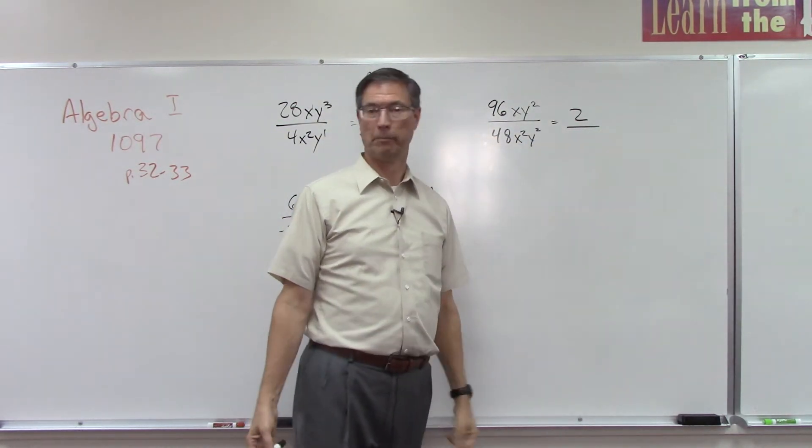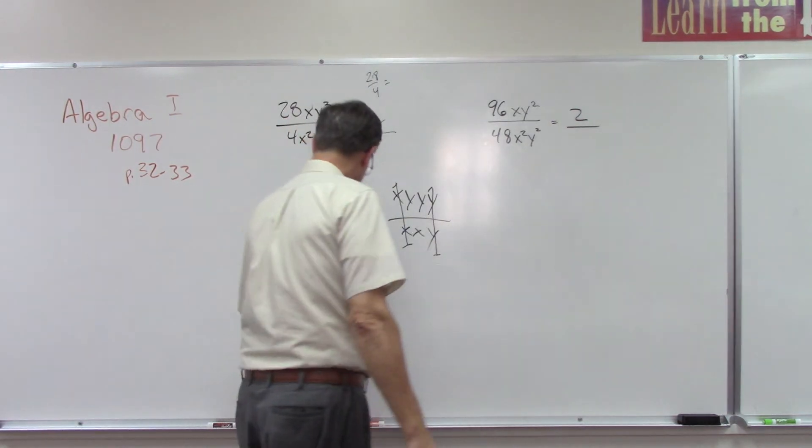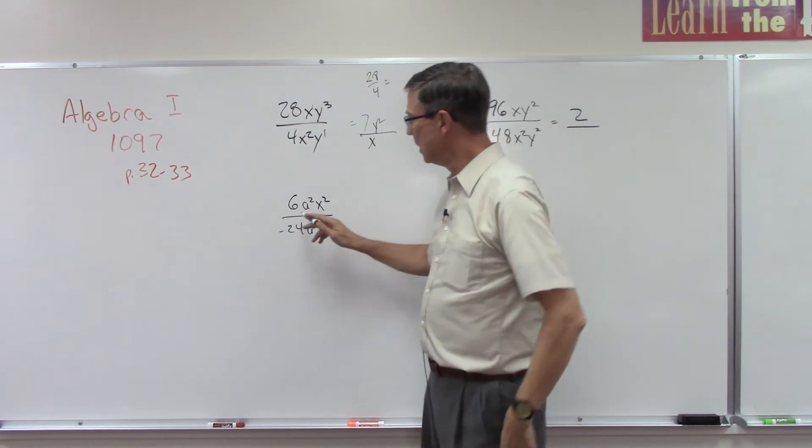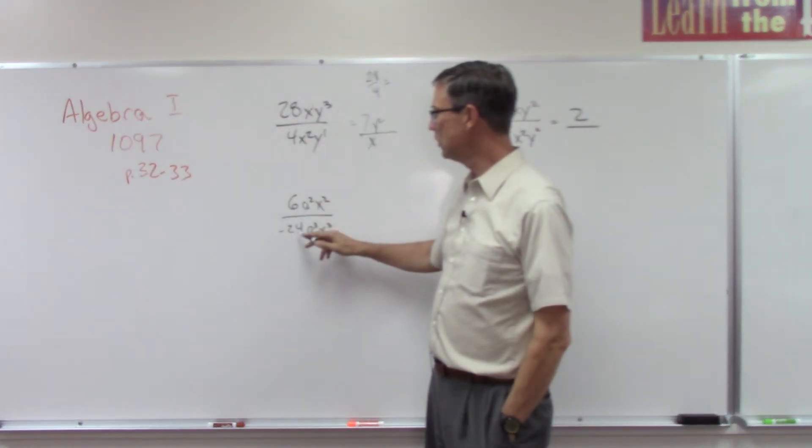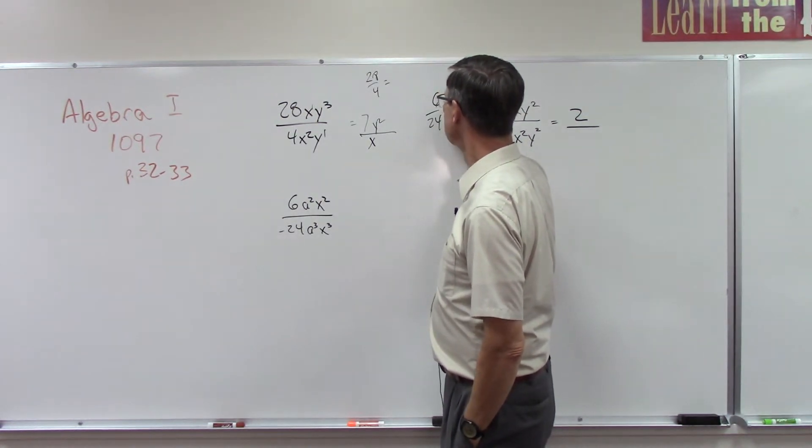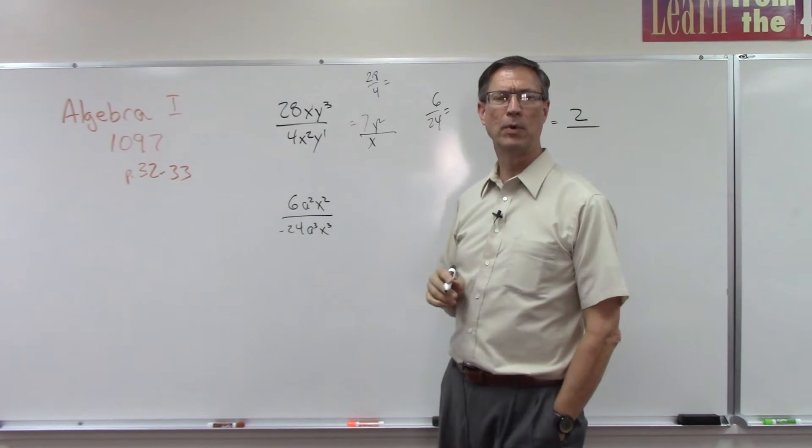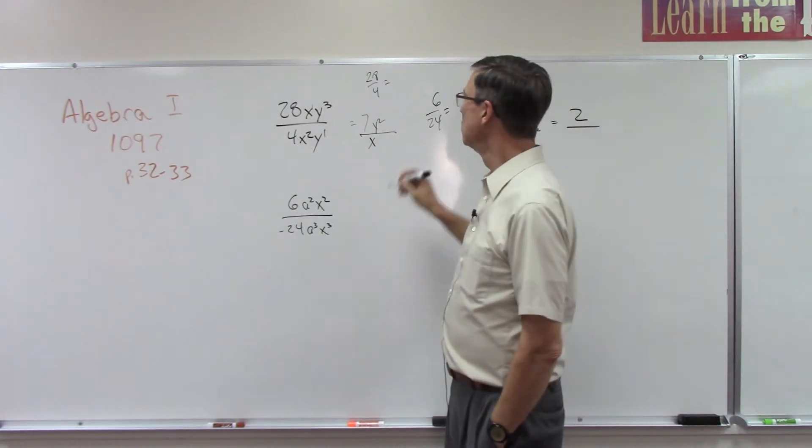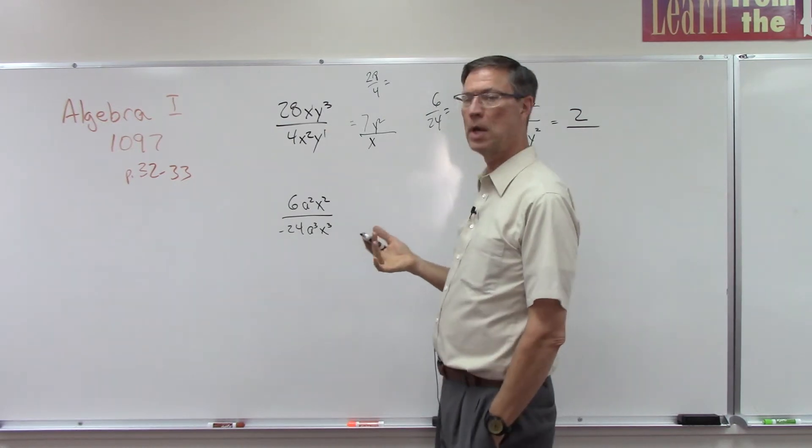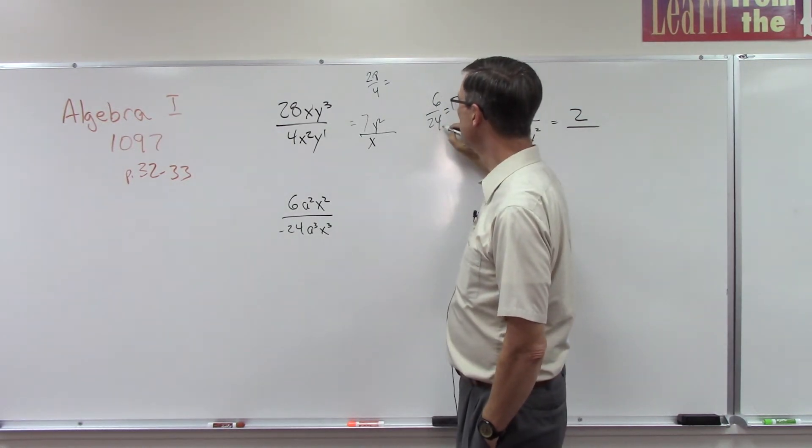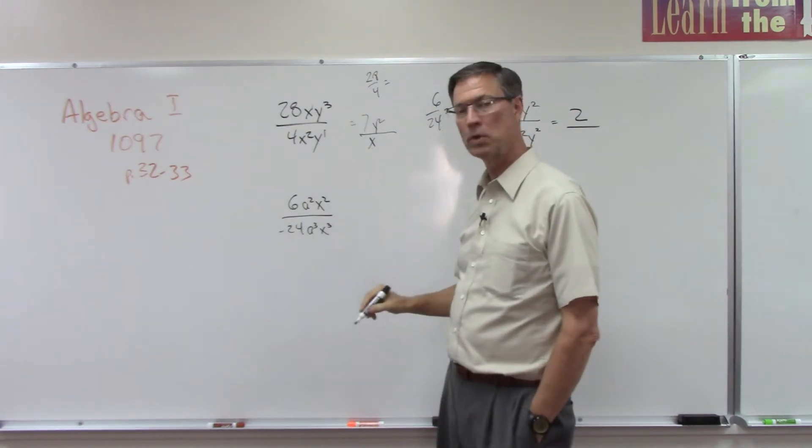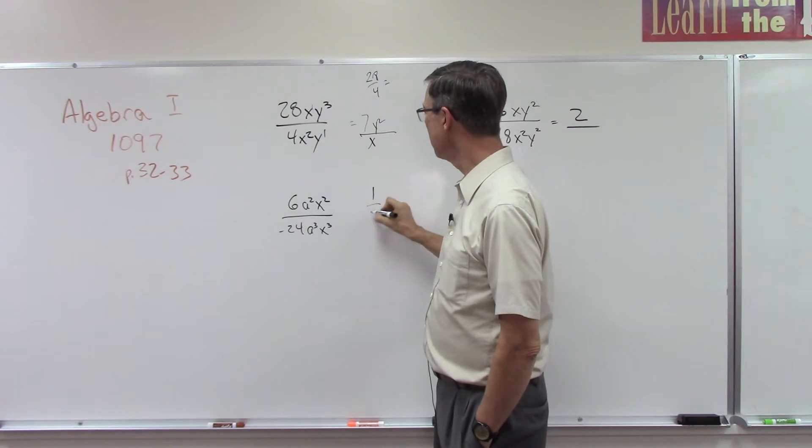Let's look at this last problem here. 6 over 24. Now if I just had the fraction 6 over 24 and said reduce that, you would look at that and say, 'Oh that's easy, I know what I'm doing.' You're dividing top and bottom by 6. You're just trying to reduce it. Maybe you first divided by 2 and then you divided by 3, but anyways you end up with 1 over 4.